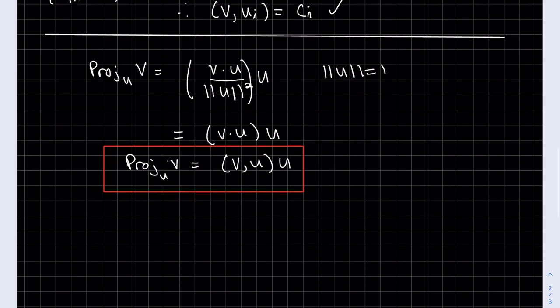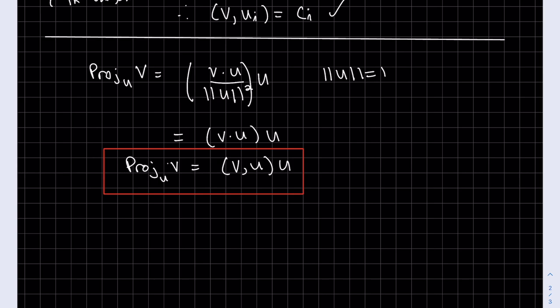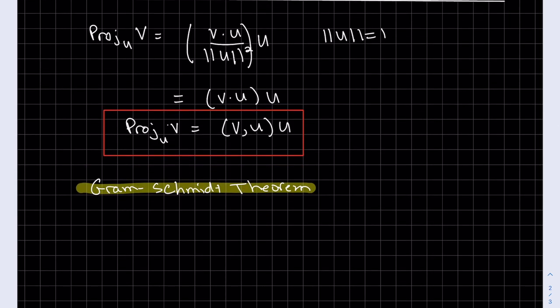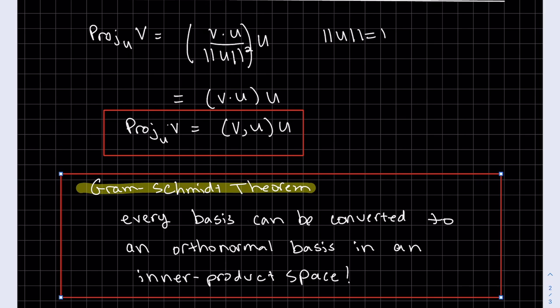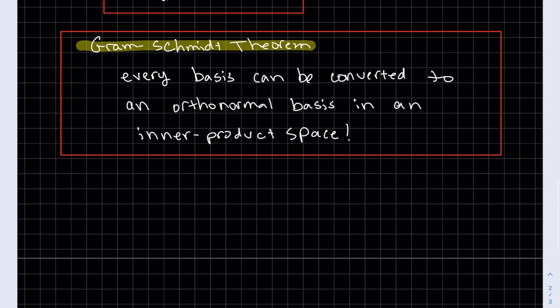Next is our theorem, and this theorem actually has a name: Gram-Schmidt Theorem. Gram-Schmidt basically says every basis can be converted to an orthonormal basis in an inner product space. And he is the one that we credit the process to. So the proof, or the process really, the process of it.